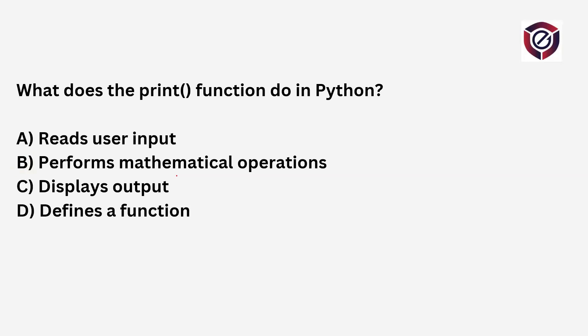What does the print function do in Python? We use print for outputting data to the console — printing a string, a mathematical result, or anything else. The options are: reads user input (no, that's the input function), performs mathematical operations (no, that's handled by mathematical functions), displays output (yes, correct), and defining a function (no, for that we use the def keyword). The correct option is C — displays output.